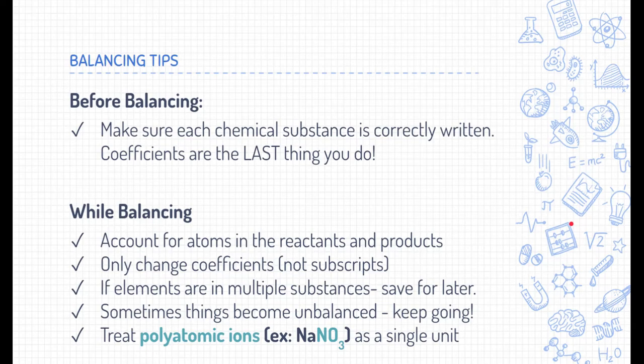When you balance a reaction, here are a few tips you should watch out for. The first one is to account for atoms on both the reactants and the products. And we'll show you an example of this. We can only change coefficients when we balance a reaction. Remember, we made sure before to make sure each chemical substance is written correctly. If we change the subscripts, then we change the chemical substance, which isn't good. If we see elements on multiple substances, it's probably a good idea to save those for later, because if you try to balance it, it might screw up a lot of things. Sometimes things might become unbalanced when they once were, and that's okay. Just keep going.